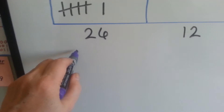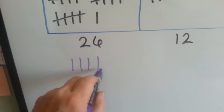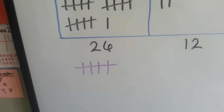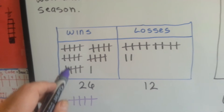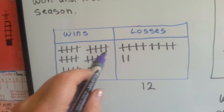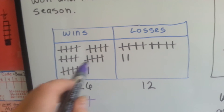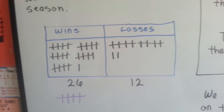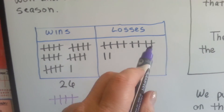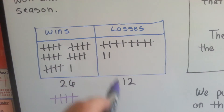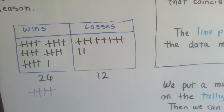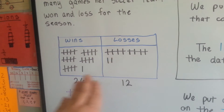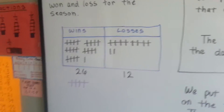You could say we won, we won, we won, we won, and then we won — you cross it. That way you can just say 5, 10, 15, 20, 25, 26 and count them very quickly. Then 5, 10, 11, 12 for losses. See how quickly we were able to count that? Plus you can visually see that there's more wins than losses.